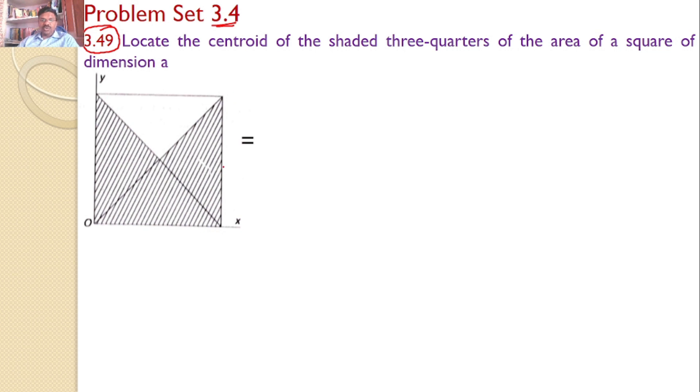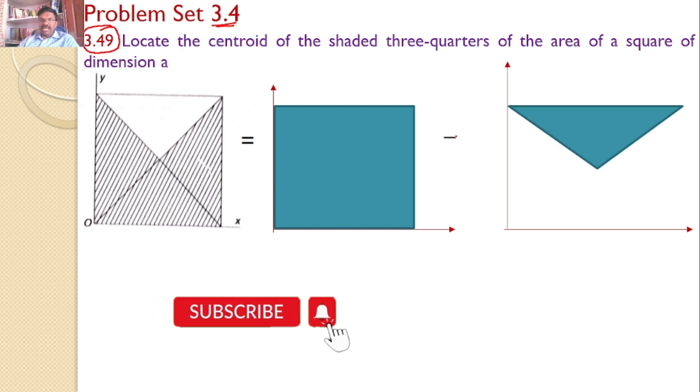minus this triangle. So this is equal to, with reference to the same x, y axis, this is my area 1, minus area 2 with reference to the same x, y axis. This is the area I need to subtract from this total area.